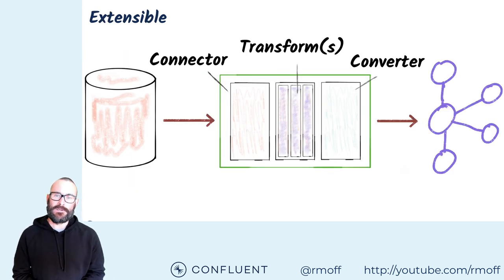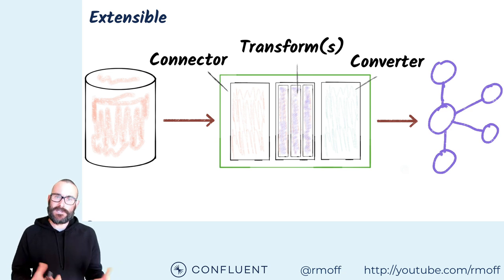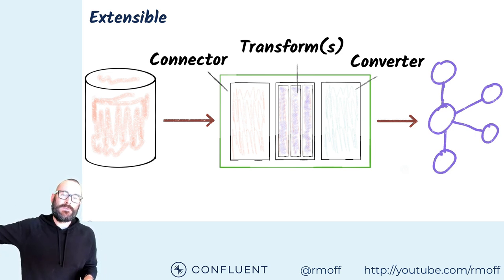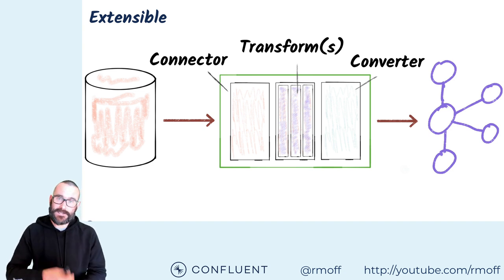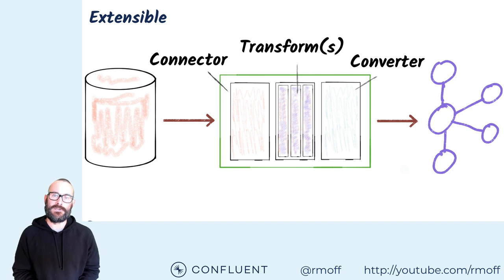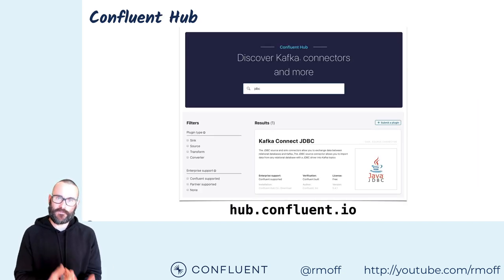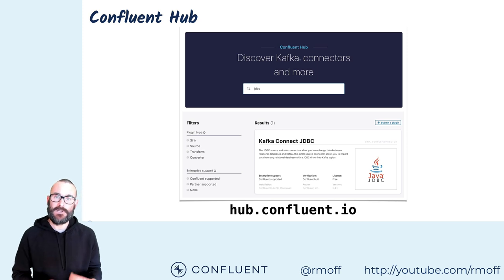These three different plugins are all extensible — you can write your own if you want to. For connector plugins, there's a huge ecosystem from the community and from vendors, so a lot of the time they already exist. If you've got some new technology for which one doesn't exist, go and write it. Your connector plugin just takes the data from the source system and passes it on internally within Kafka Connect — the converter is responsible for serializing that data. You can get all of these off Confluent Hub — type in a particular technology or transformation you're interested in, and you can find what you need.